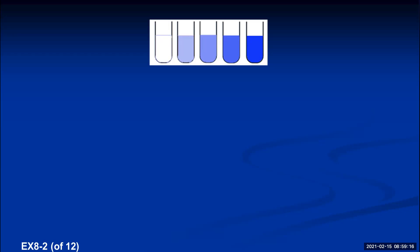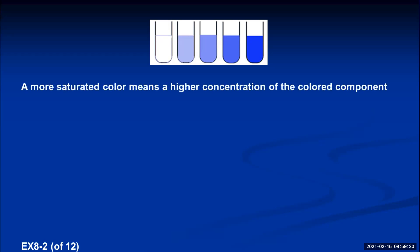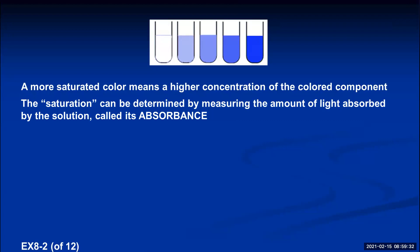Why would that be? Because there was more copper sulfate pentahydrate in those particular mixtures. So a more saturated color of blue means a higher concentration of the colored component — the polyatomic ion containing copper and ammonia. The saturation can be determined by measuring the amount of light absorbed by the solution, which we call the absorbance. A really blue solution absorbs a lot of light; high absorbance means a saturated blue color and a high amount of the colored component. A very colorless solution has low absorbance — it lets light pass right through.